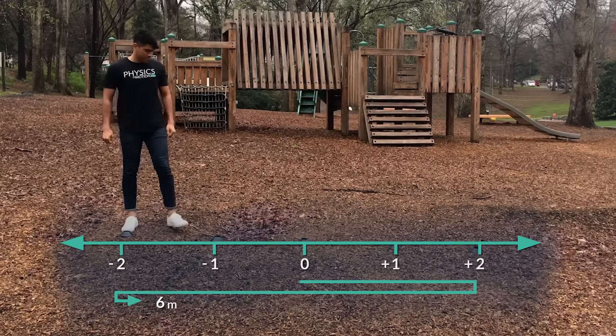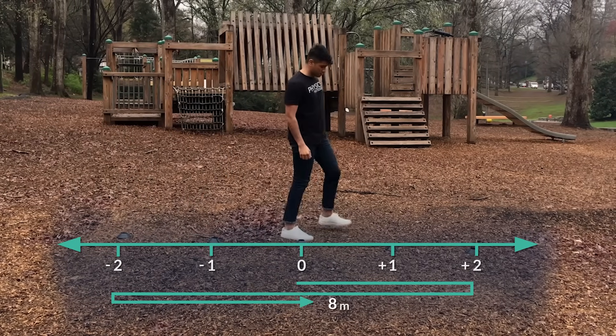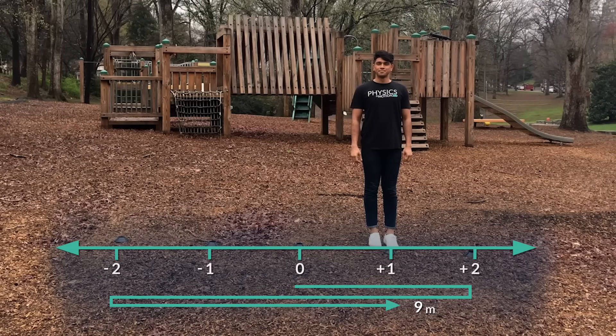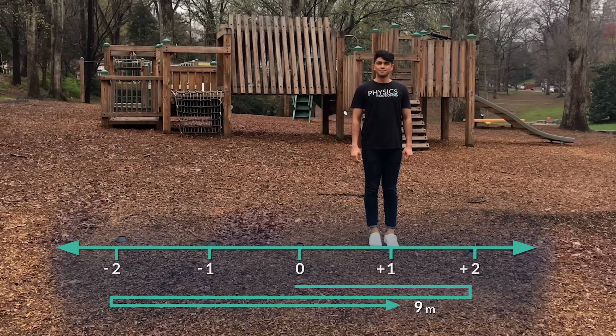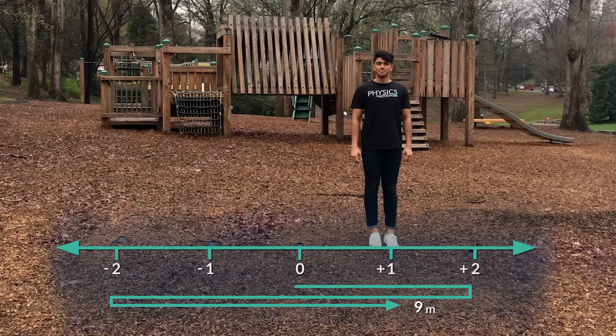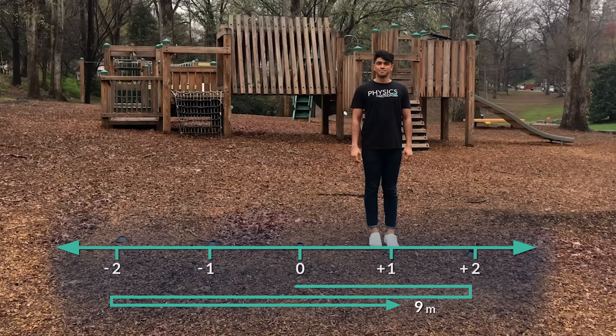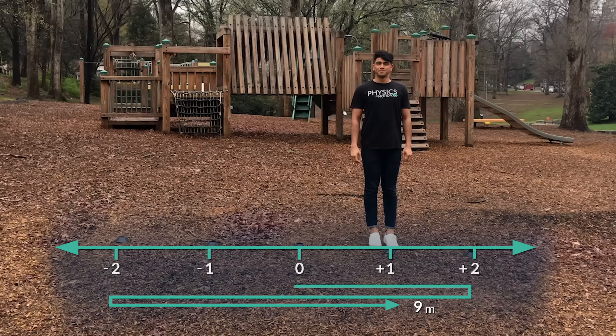Now, what if he walks three meters to the right? The total distance he's traveled is nine meters. Again, when measuring distance, the path he takes between an origin and destination matters. So even though he ended up only one meter away from his origin, his total distance traveled is still nine meters.